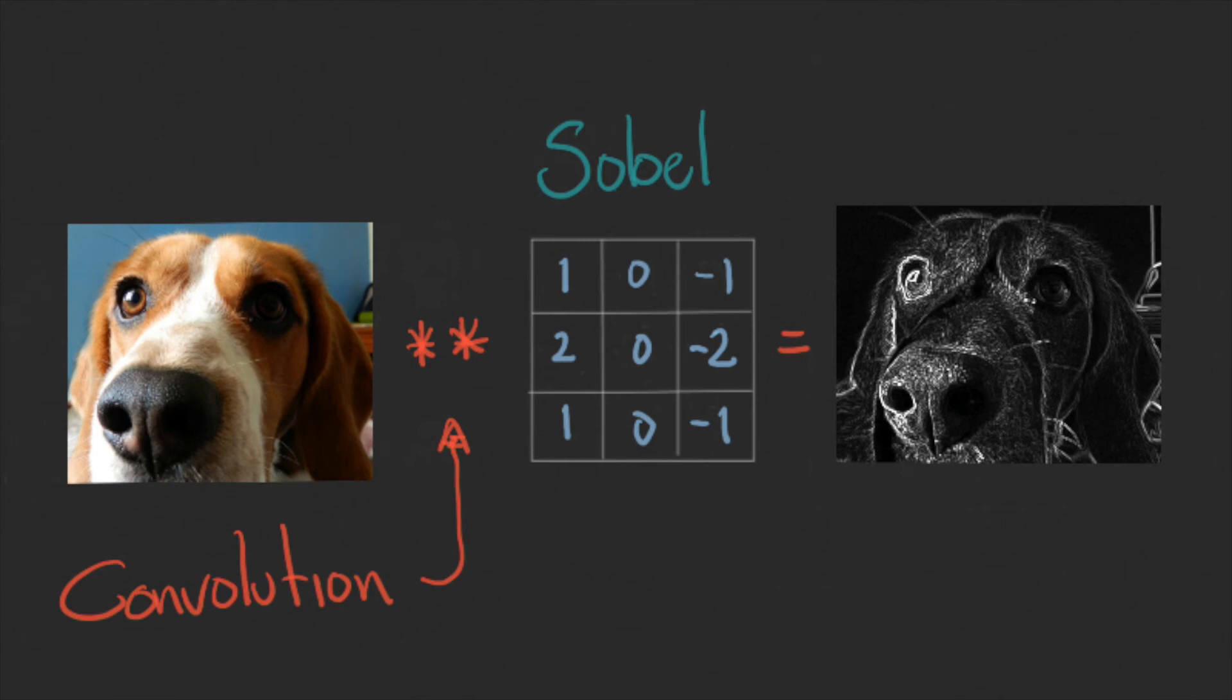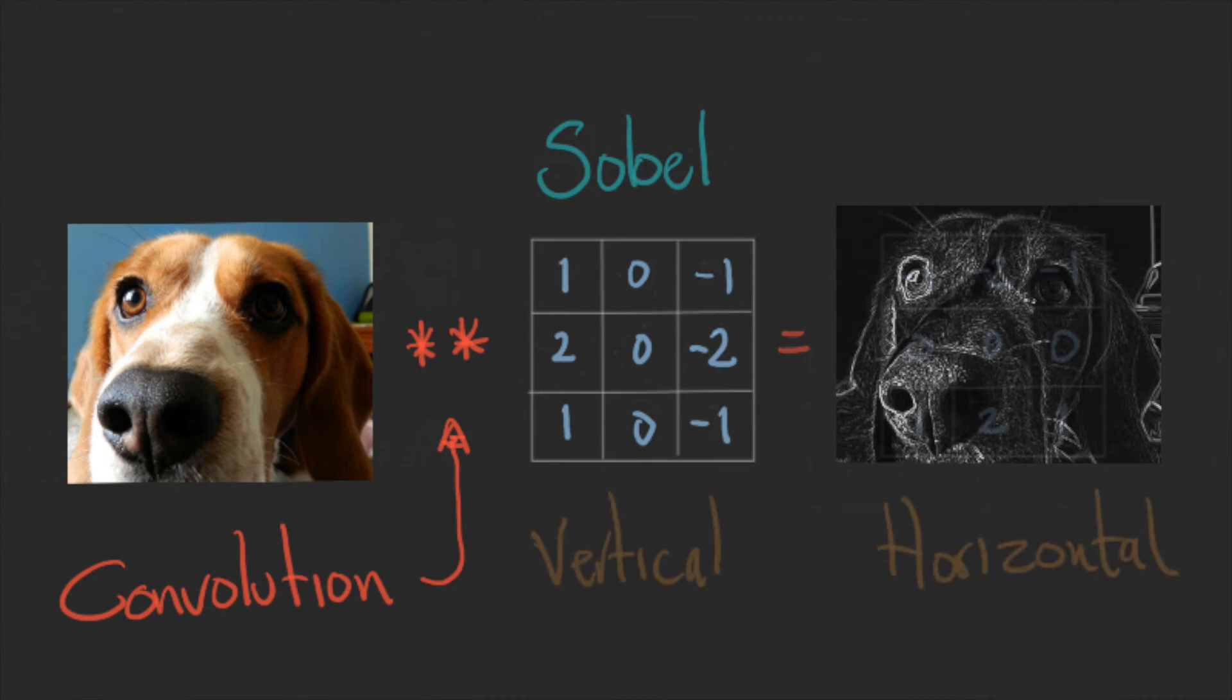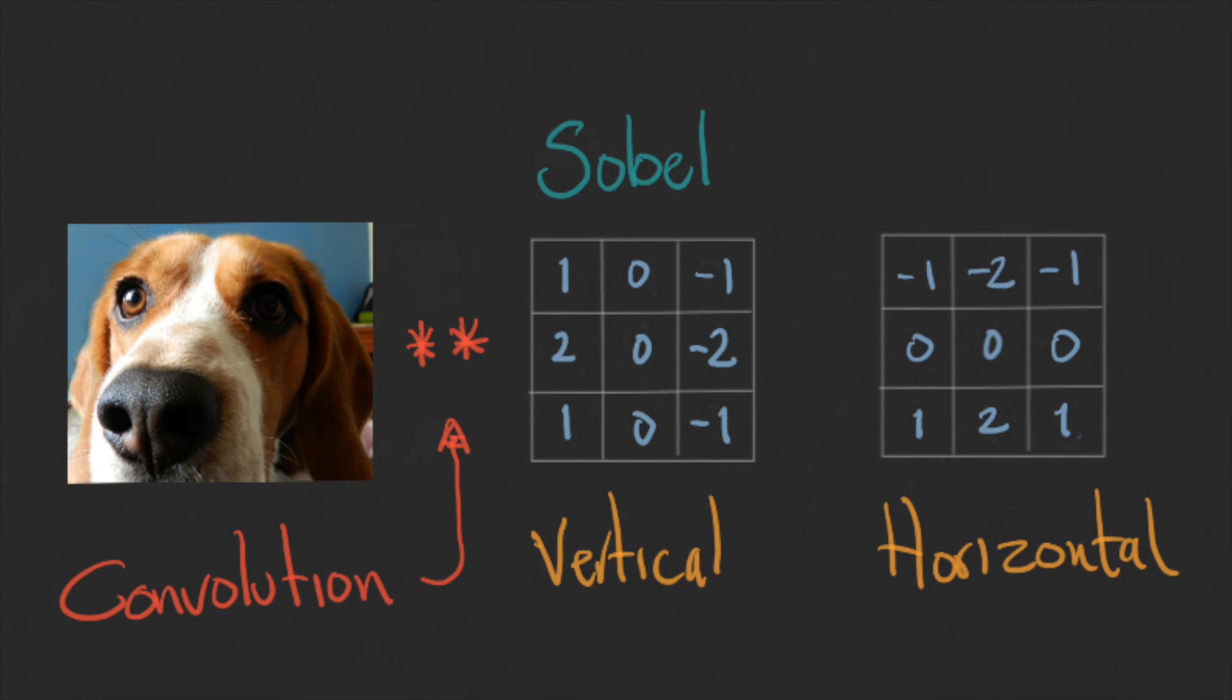This specific kernel is looking at vertical edges, but we can run another convolution using the horizontal version. Then the result will be more accurate.